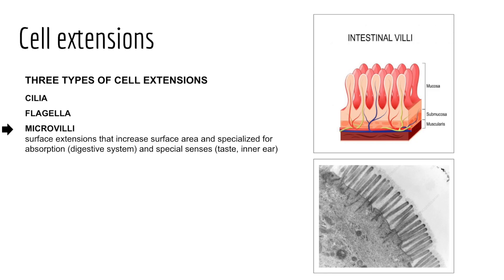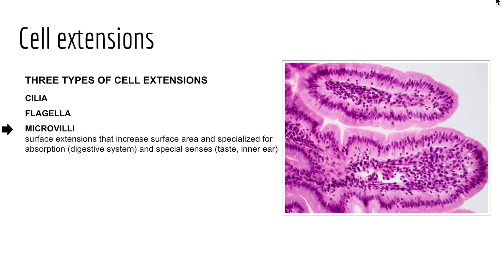Finally, we have microvilli — microscopic projections of the plasma membrane involved in increasing the surface area of the cell, functioning in absorption such as with the cells that line the small intestine. There would be many microvilli projecting out to increase surface area in the lumen of the small intestine, where we would want to see nutrients absorbed into the bloodstream and lymphatics.